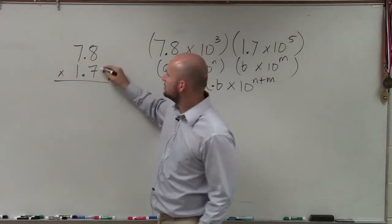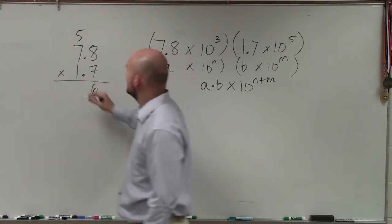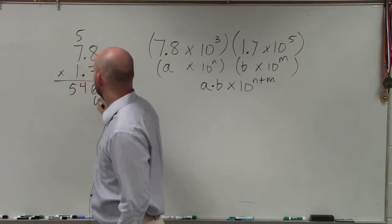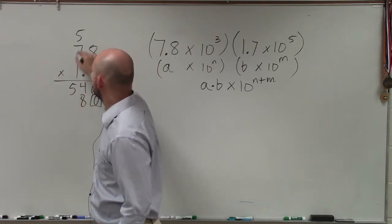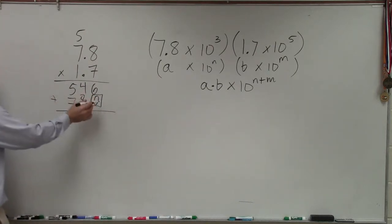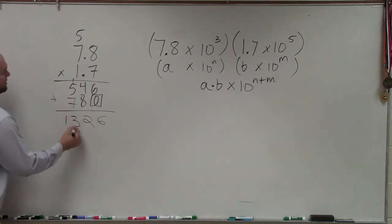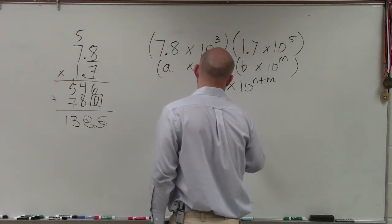I can do 7 times 8, which is 56. 7 times 7, which is 49, plus 5 is going to be 54. 0 as my place value. 1 times 8 is 8. 1 times 7 is going to be 7. Then I add the two rows: 6 plus 0 is 6, 4 plus 8 is 12, 5 plus 1 is 6, plus 4 is 13. I count how many decimal points are to the right, or how many place values are to the right of my decimal points, which is 2. So therefore, my answer is 13.26.